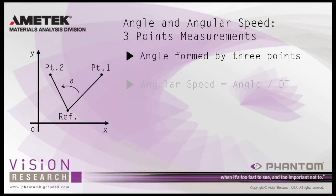Angle and angular speed measurements using three points measures the angle formed by three points, and the angular speed, which equals the measured angle divided by the time of the last point frame minus the time of the first point frame, if the first and last points are on different frames.